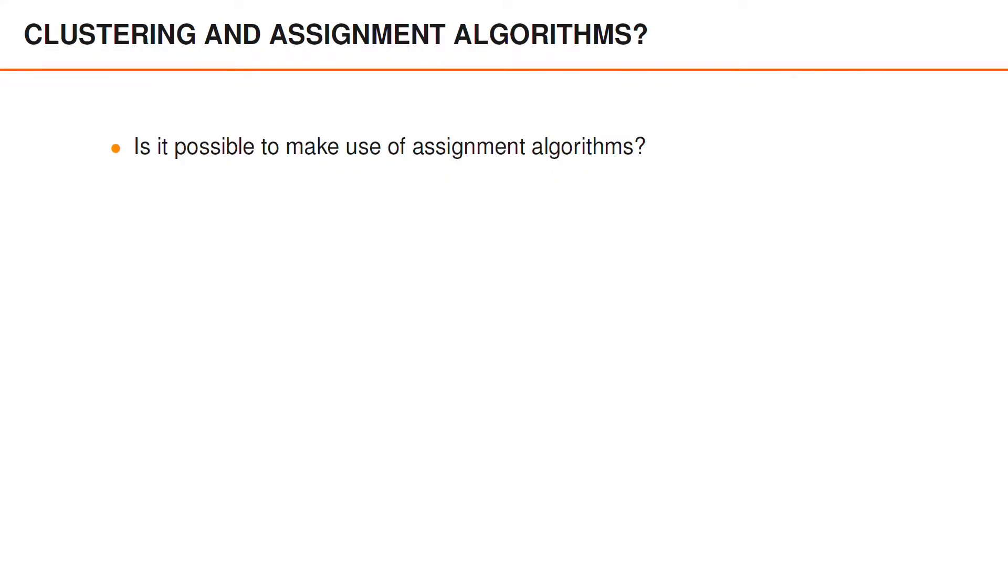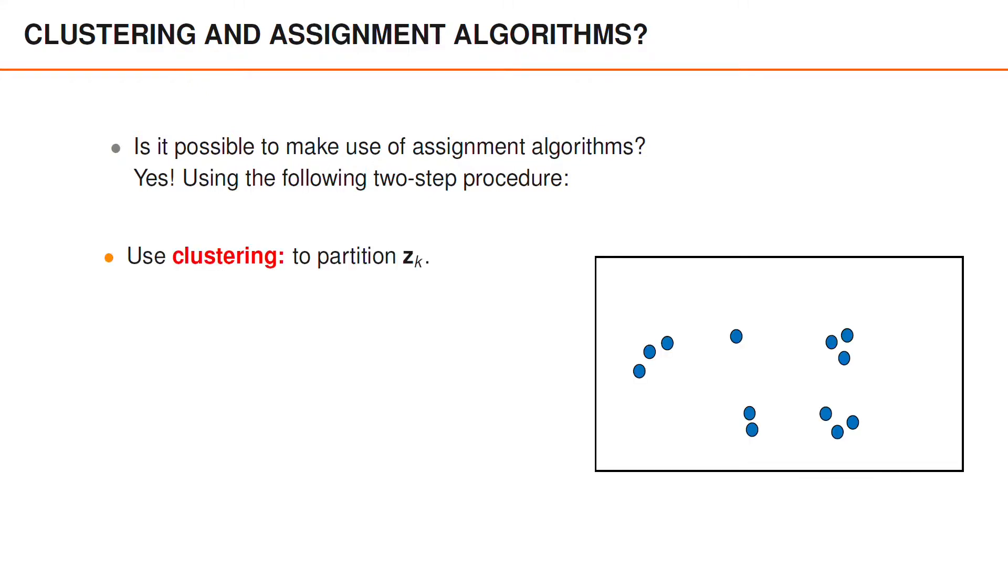Considering how efficient the assignment algorithms are, it would be nice if we could make use of them also here. Fortunately, there is actually a simple two-step procedure that enables us to do this. In the first step, we use clustering to partition the set of measurements zk. For instance, for the set of measurements illustrated in the figure, the following may be reasonable clusters.